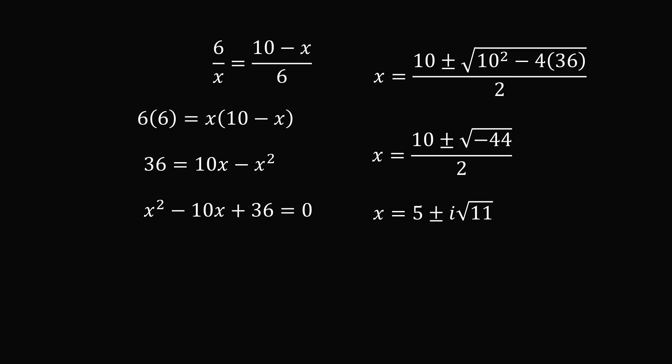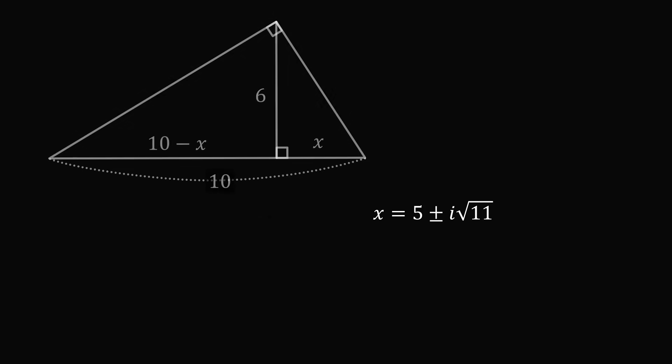But now what does that mean for the original diagram? X was supposed to be a positive real number and we have come up with a complex answer. This is physically impossible for a geometry problem. It is not possible for a triangle to have these dimensions.